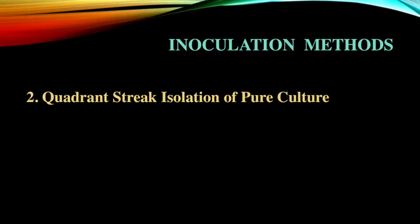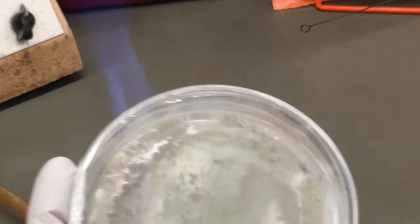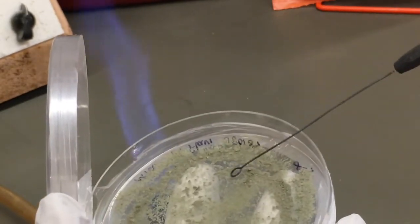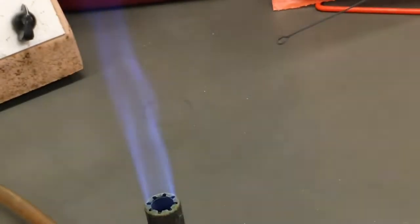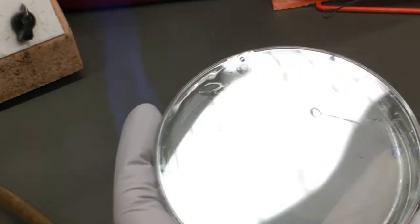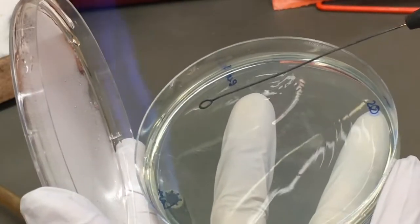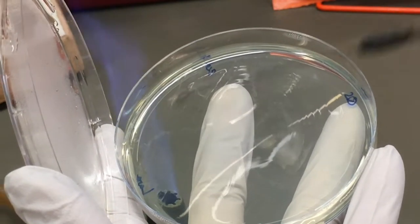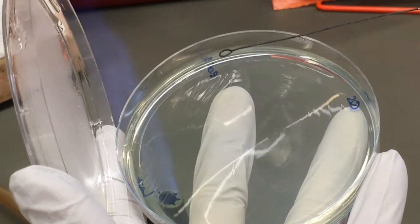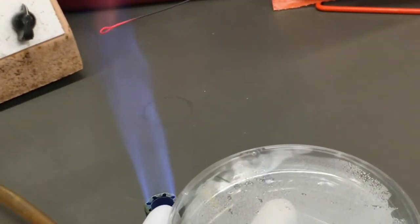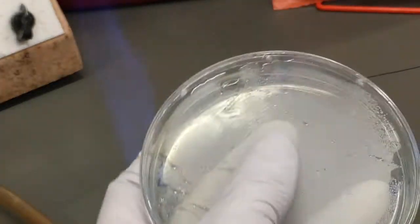The quadrant streak is one method by which we can isolate a pure culture. Coming from a plate culture, you want to gently touch your sterile loop several times to the culture to pick up some inoculum. If you can actually see it on your loop, that's too much. Now generously spread this initial inoculum across one side of your plate. This is your first quadrant. We now need to sterilize our loop to remove this initial inoculum off so that we're getting less and less as we move across the plate.